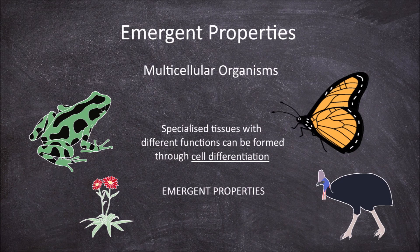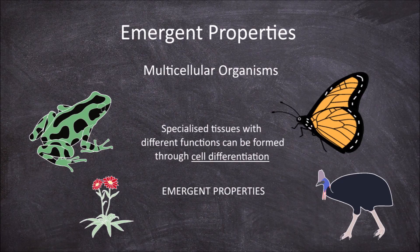An emergent property is something that occurs when parts of an entity produce new functions when together that they do not produce as individual parts.